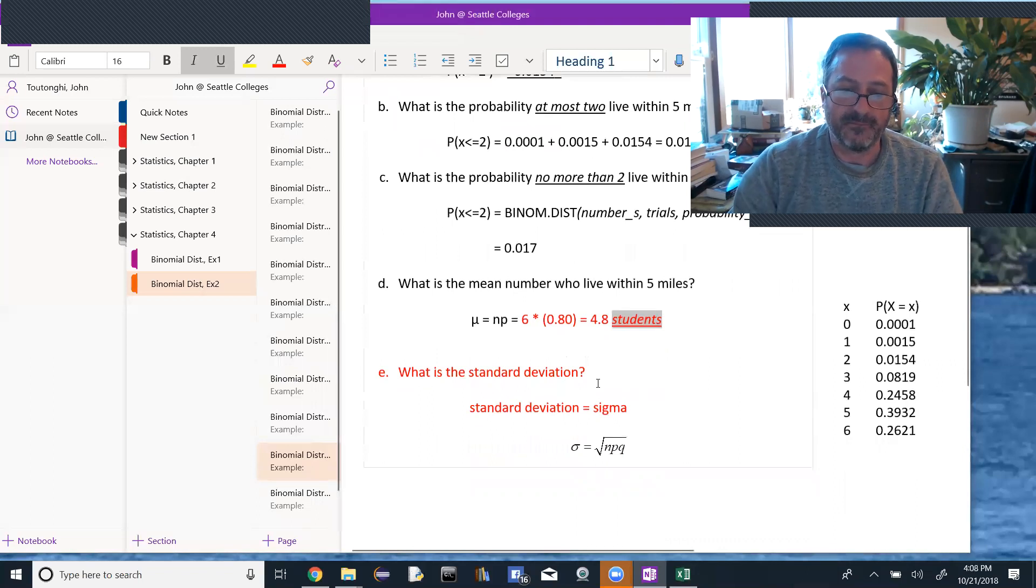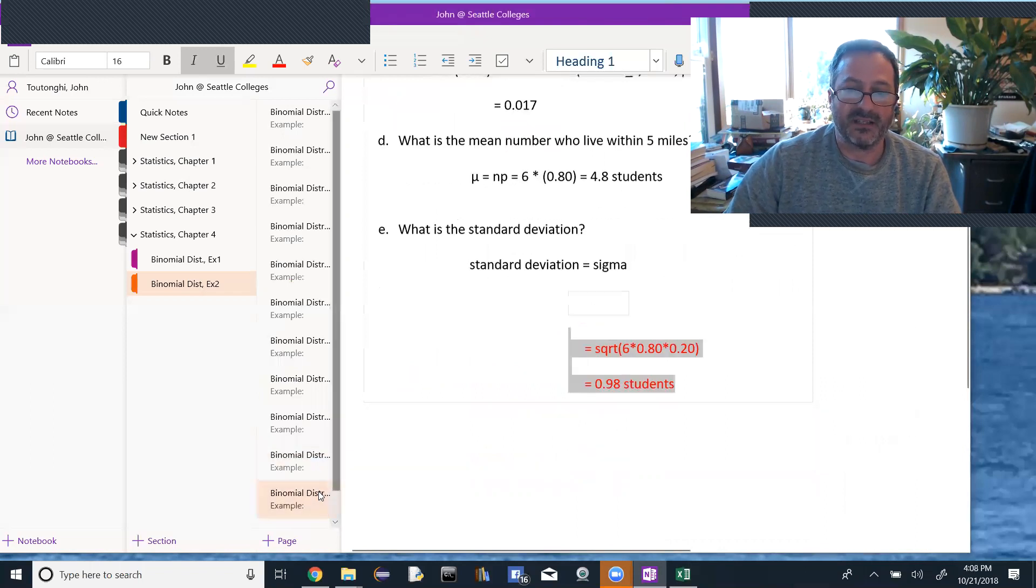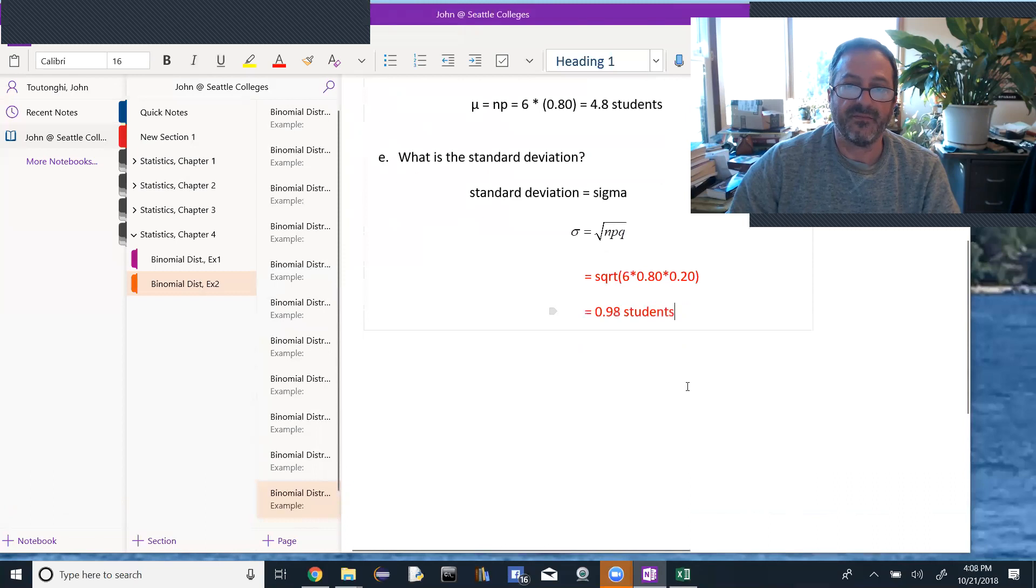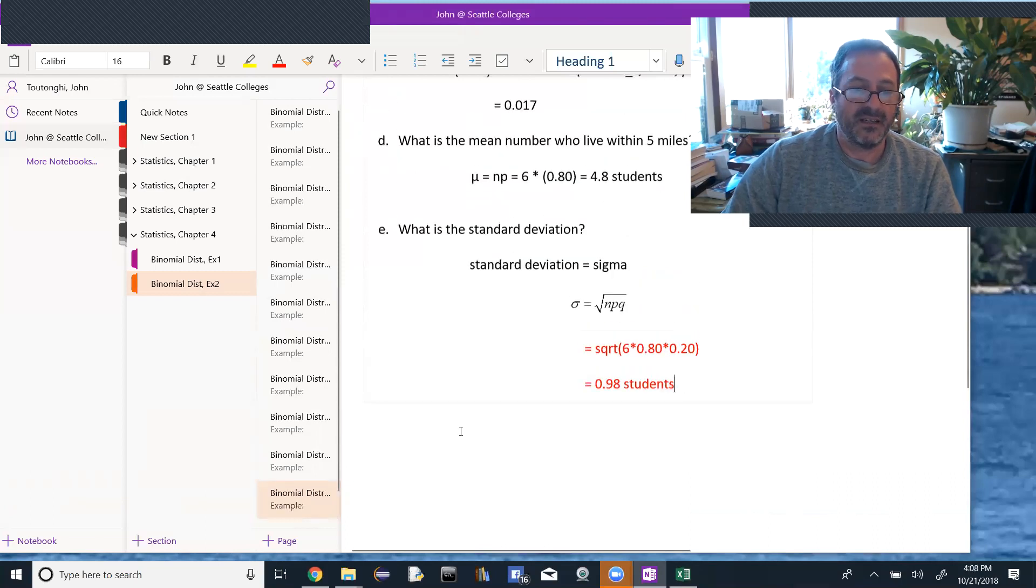And then the second question says, what is the standard deviation? And again, because we're in a binomial distribution, we have a formula for that. So the standard deviation is the Greek letter sigma, lowercase sigma, and it's the square root of n times p times q. So I'll just do that calculation. I can do it in Excel, equals the square root 6 times 0.80 times 0.20, and 0.98. And the units on that would be 0.98 students.